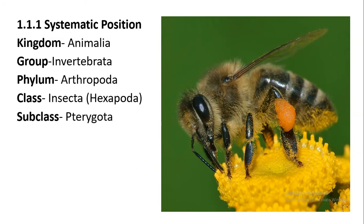Then the subclass is Pterygota. These are insects which have wings. Then comes the division Endopterygota, which means they produce eggs, larvae, and pupae, and then comes the adult stage. So these are four phases.